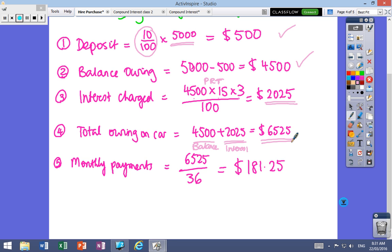And so we look at how many times, how many months. Okay, so that's three years and we're paying it in months. So divide by 36 and you get $181.25. So if you pay that off for three years, you'll have paid off the car. Okay, so copy that down if you need to and then come to the next page.